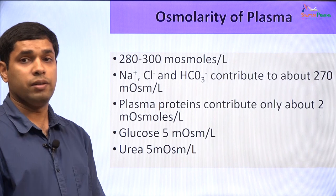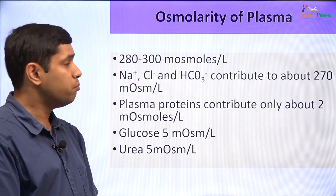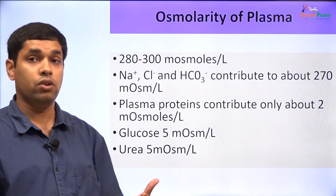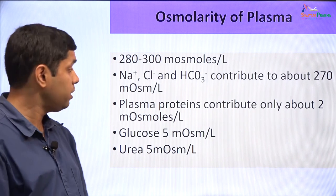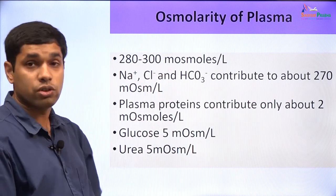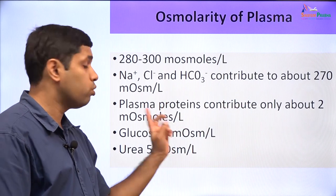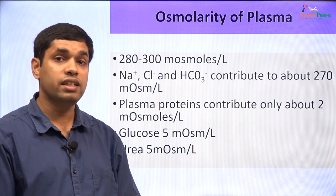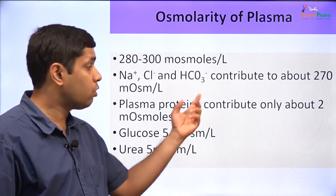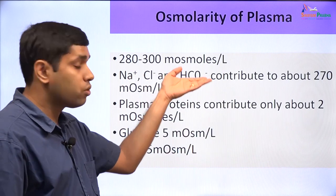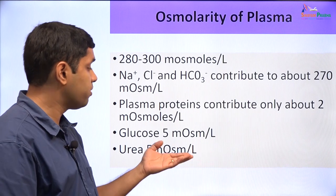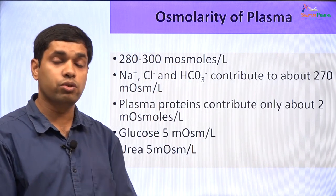The osmolarity of plasma is about 280 to 300 milliosmoles per liter. The ions that contribute to this are predominantly sodium, chloride, and bicarbonate in the ECF, which contribute about 270 milliosmoles. Plasma proteins contribute only about 2 milliosmoles per liter — but when we discuss edema, we will see that these contribute to the colloidal osmotic pressure, while ions contribute to the crystalloid osmotic pressure. Glucose contributes about 5 milliosmoles per liter and urea about 5 milliosmoles per liter.